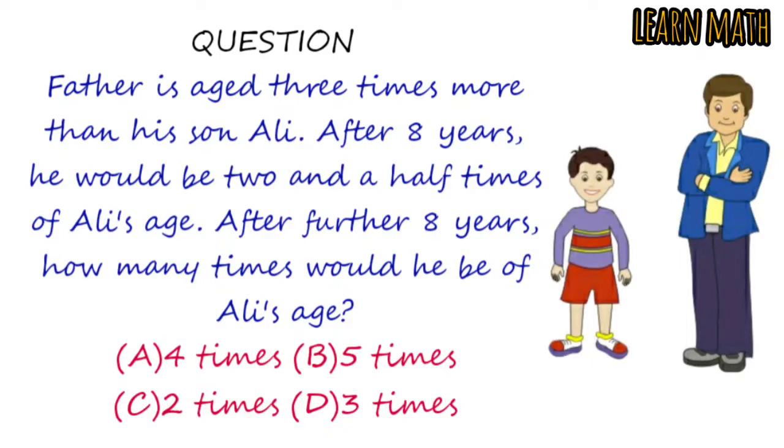The question is: Father is aged three times more than his son Ali. After eight years, he would be two and a half times of Ali's age. After further eight years, how many times would he be of Ali's age?